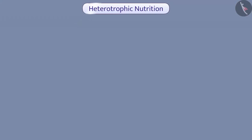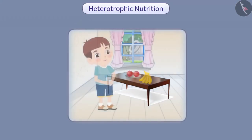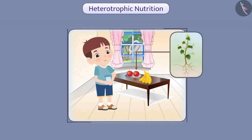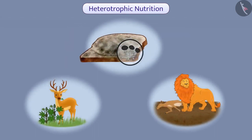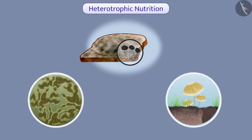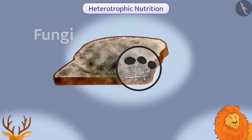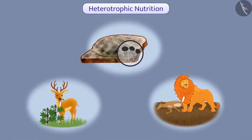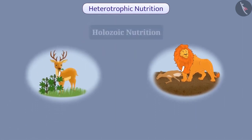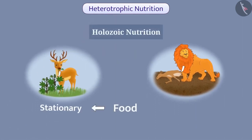Now let us understand heterotrophic nutrition in detail. Heterotrophic organisms depend on the food made by autotrophic organisms. Depending on the type of food, availability of food material, and method of food intake, different heterotrophic organisms may have different forms of nutrition. For example, some heterotrophic organisms such as yeast, mushroom, and fungi break down food material outside their body and then absorb it, while other organisms ingest food that is digested inside the body. In herbivores, the food is stationary, while in carnivores, the food is mobile.